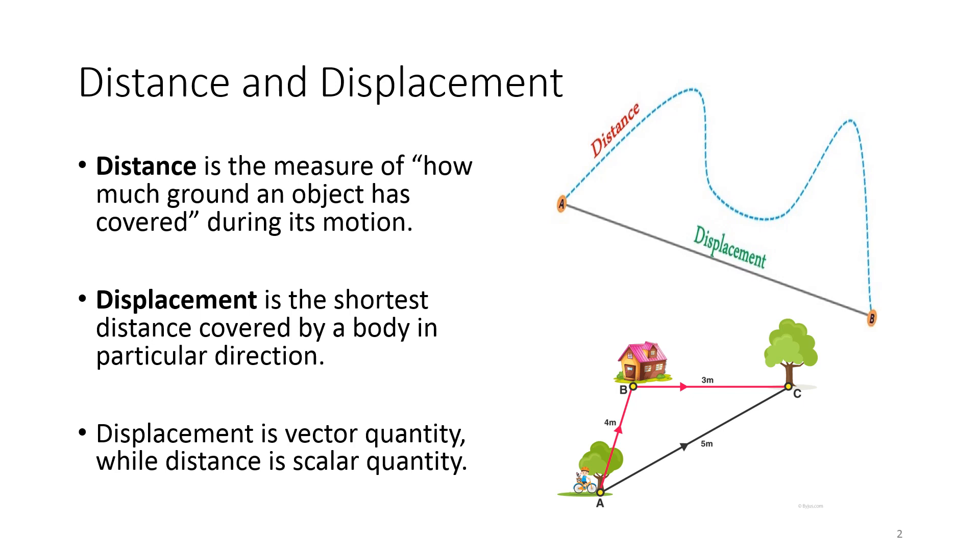Distance and displacement. Distance is the measure of how much ground an object has covered during its motion. Displacement is the shortest distance covered by a body in a particular direction. Displacement is a vector quantity, while distance is a scalar quantity.